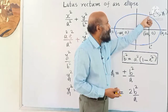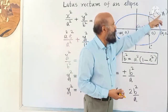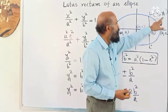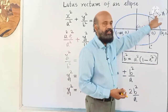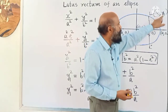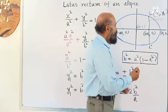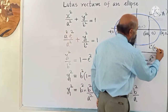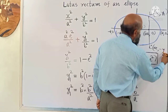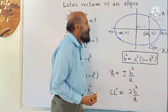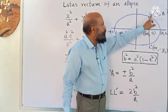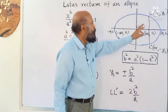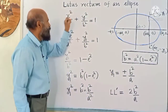The x-coordinate of the point on the latus rectum is ae, and let us assume the y-coordinate is y₁. So the coordinate of this point is (ae, y₁), and on the other side it will be (ae, −y₁). Since this point is on the ellipse, it should satisfy the equation of the ellipse.